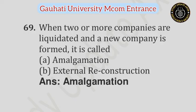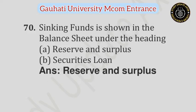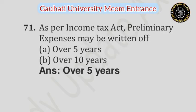Question number 69: When two or more companies are liquidated and a new company is formed, it is called — Option A: Amalgamation, Option B: External reconstruction. Answer is Amalgamation. Question number 70: Sinking fund is shown in the balance sheet under the heading — Option A: Reserve and surplus, Option B: Securities loan. Answer is Reserve and surplus. Question number 71: As per the Income Tax Act, preliminary expenses may be written off — Option A: Over 5 years, Option B: Over 10 years. Answer is Over 5 years.